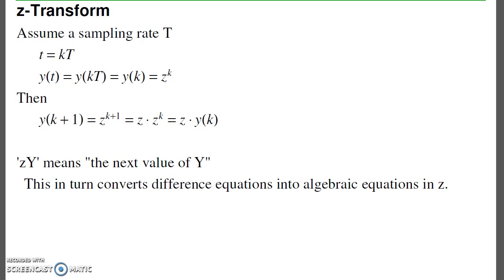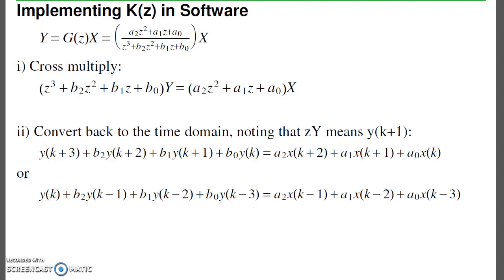Z-transform is how you do that with difference equations. The assumption behind a Z-transform is that I have a constant sampling rate t, so that time is my sample number k times my sampling rate, or just y of k for short. Assume that all functions are in the form of z to the k. What that does is when I go one sample in the future, I get z to the k plus 1, which is z times z to the k, or z times y. So in the Z-transform, z y means the next value of y. What the Z-transform does is it converts difference equations into algebraic equations in z.